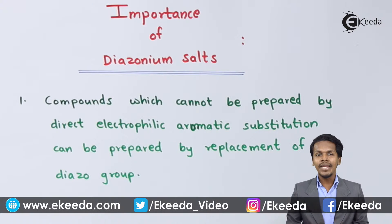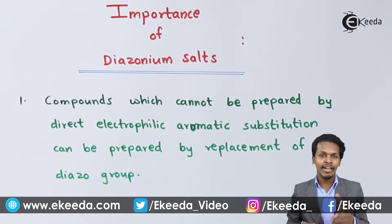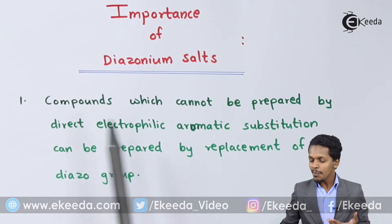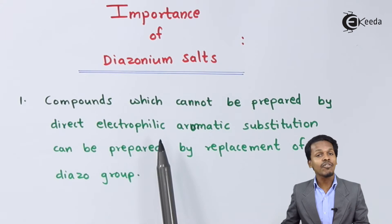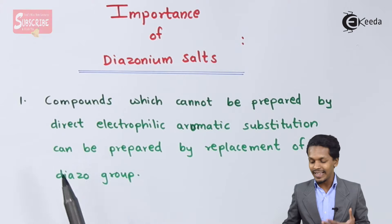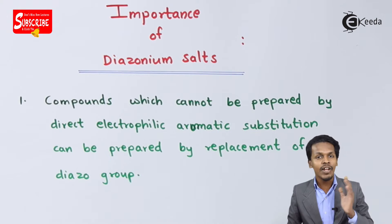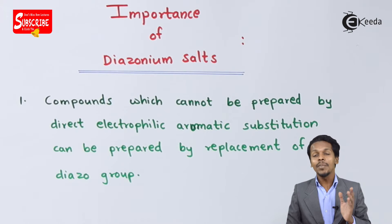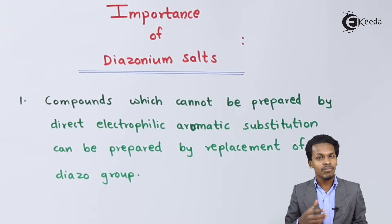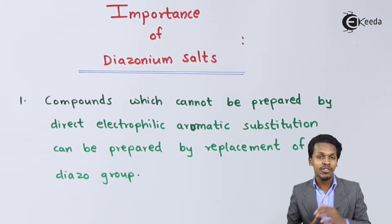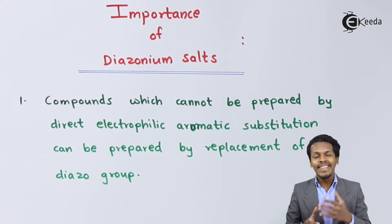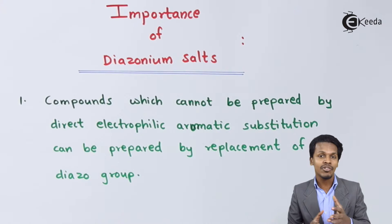In this topic, let me introduce a few points regarding the importance of diazonium salts. The first point is that compounds which cannot be prepared by direct electrophilic aromatic substitution reaction can be prepared by replacement of the diazo group. For example, if we have to introduce groups like chloro, bromo, iodo, nitro, or hydroxyl group, they cannot be easily synthesized by just doing the electrophilic substitution reaction on benzene.